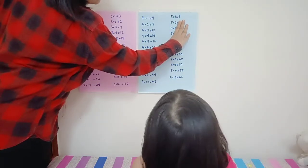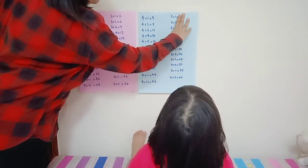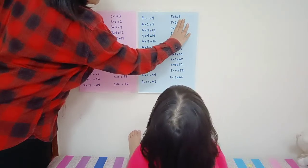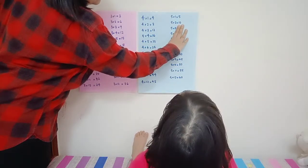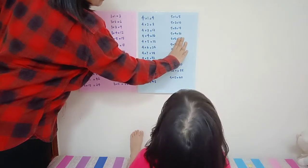Five times two ten, five times three fifteen, five times four twenty. Five times one... five. Five times ten... ten. Five times two, five times three fifteen, five times four twenty, five times five twenty-five.